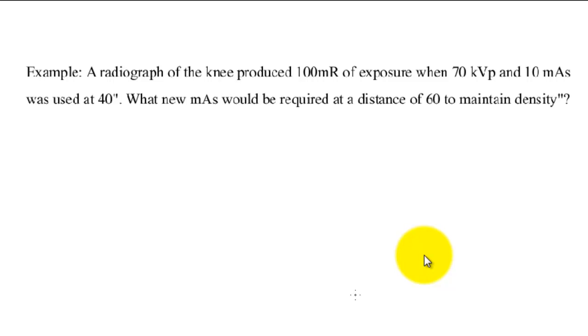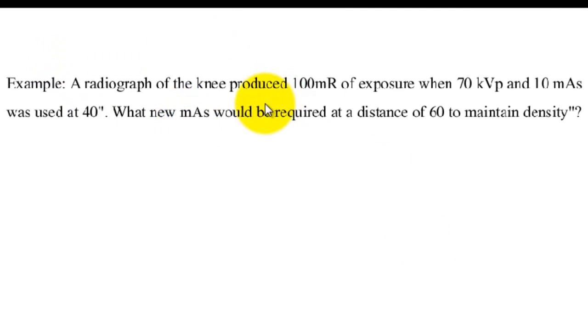Let's go ahead and read this one though, and I'm just going to try to underline the variables as we go. A radiograph of the knee produced 100 milliröntgen, let's get that guy underlined there, of exposure. Remember, unit of intensity, exposure, when 70 kVp and 10 mAs was used at 40 inches. Wow, that's four variables right there in the first sentence.